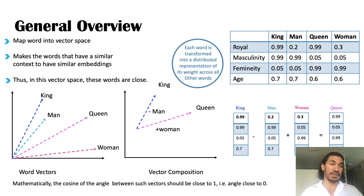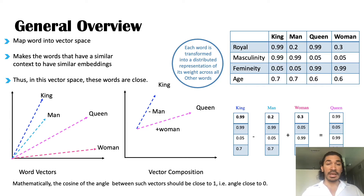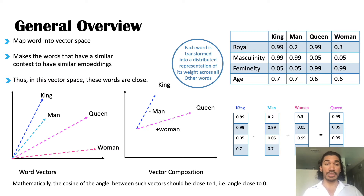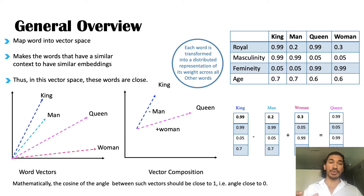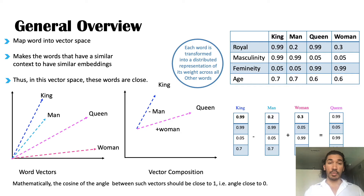Here you can see that king and man — these two vectors are very close to each other compared to the word queen. Once we have the numeric representations of different words, we can do mathematical calculations, like king minus man plus woman gives you queen. Each word is transformed into a distributional representation of its weight across all other words — here you can see the different distributions of the word king.